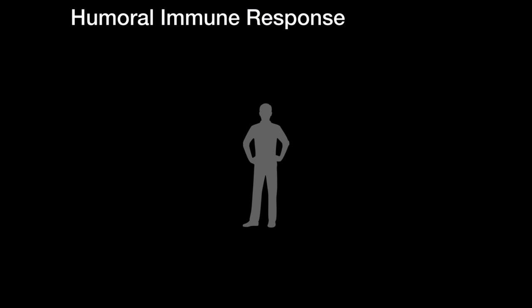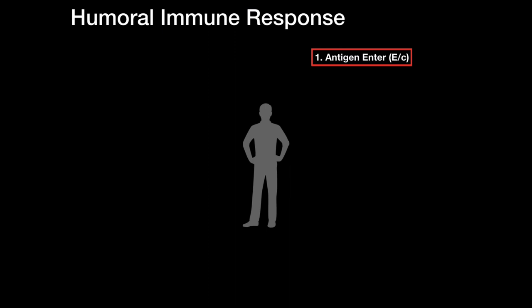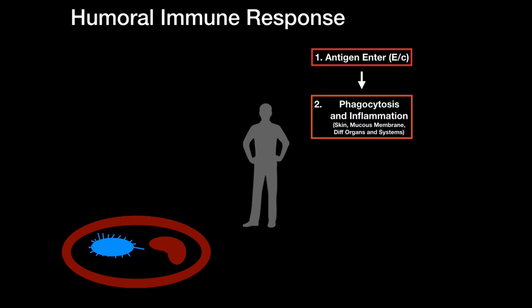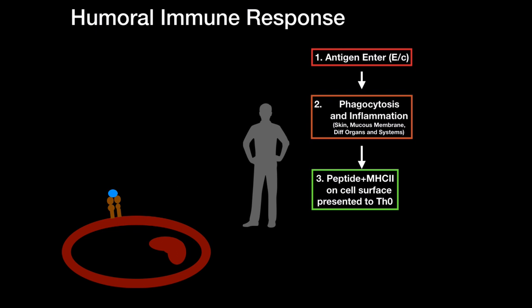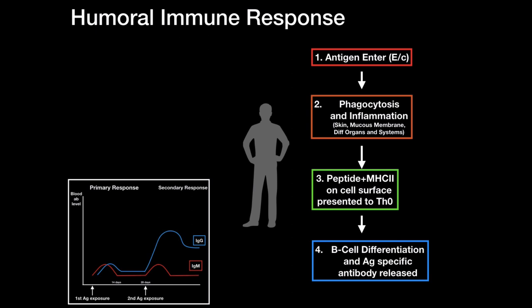To make this easier, I've divided the humoral immune response into four main steps. First comes the antigen, and it has to be an extracellular antigen, because if it's an intracellular antigen, we're not looking at humoral anymore — we're over to the cellular immune response. So, extracellular microorganism. Then comes phagocytosis and inflammation. Then the peptide is presented on an MHC class 2 molecule to a naive T helper cell. Finally, B cells differentiate and antigen-specific antibodies are released. Remember, producing antibodies is our goal, and at the end of this video I'll talk about primary and secondary humoral immune response.